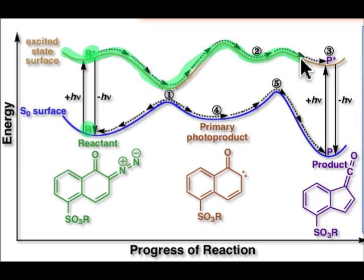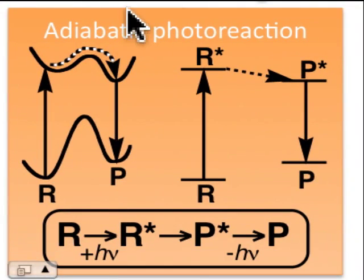It can move along that surface all the way to the product, still in the excited state. In the excited state, that product can emit a photon and jump down to a ground state surface of a new product that's shown here. This process, where only the excited state surface is involved, is what's known as the adiabatic photoreaction.